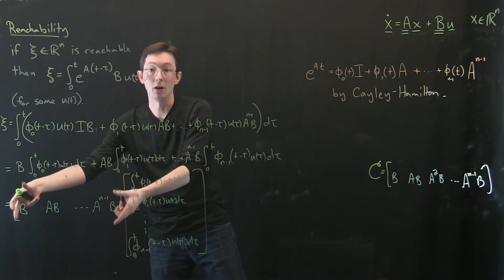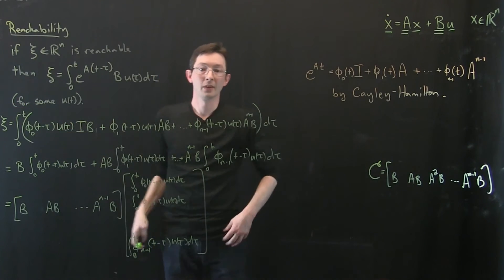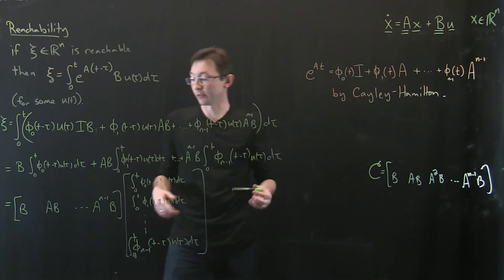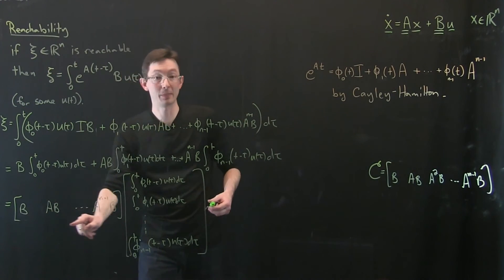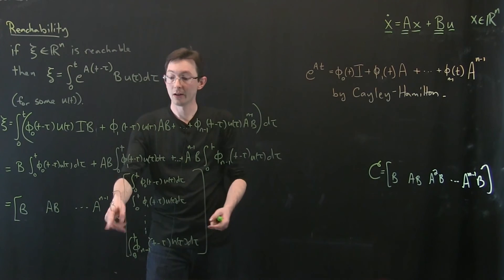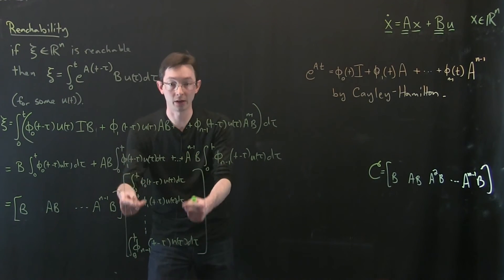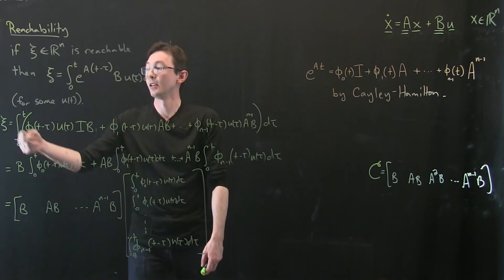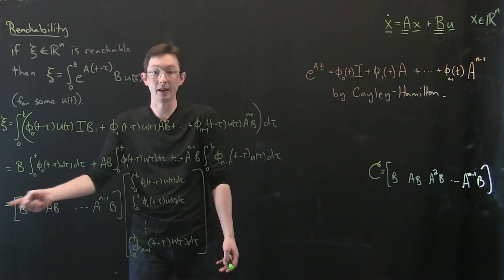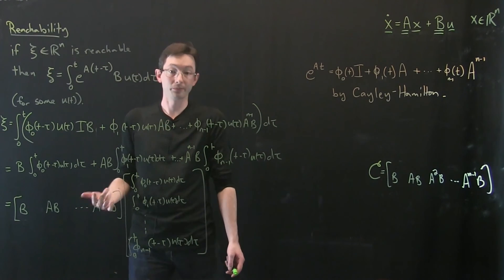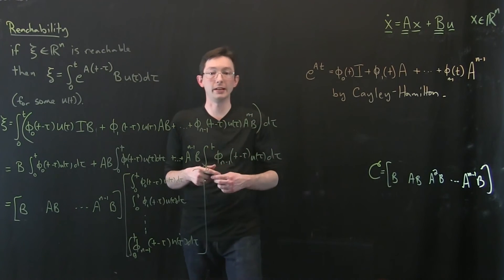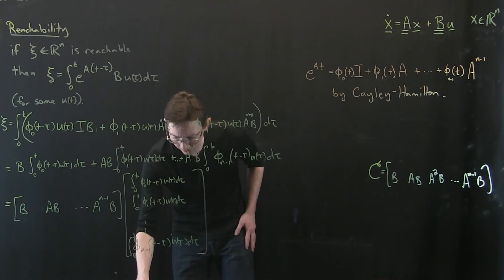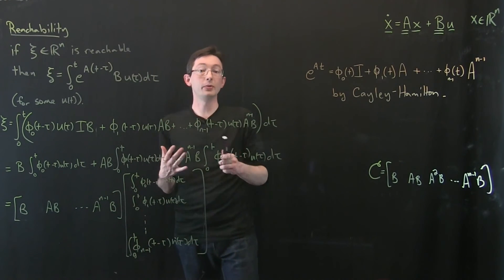Because if this is full rank, that's the only way that my states are reachable. And in fact, the converse is even easier to see. If this does not span certain directions in R^n, there is no way I can cook up some linear combination to get those directions. Because it's just not in this column space. Okay, so it's a really useful idea. And I like to ask my students a simple question.